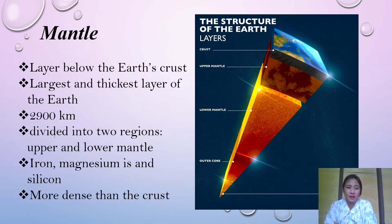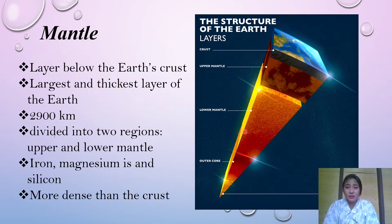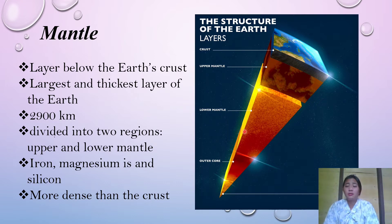Let's discuss the mantle — the layer below the Earth's crust and the largest and thickest layer of the Earth, composed of 2,900 kilometers. The mantle itself can be broken up into separate layers: the upper and the lower mantle. The upper mantle begins beneath the crust at the Mohorovičić discontinuity and makes up the asthenosphere and parts of the lithosphere. The mantle reaches all the way just above the outer core at the Gutenberg discontinuity. The mantle is composed of iron, magnesium, and silicon, and is more dense than the crust.